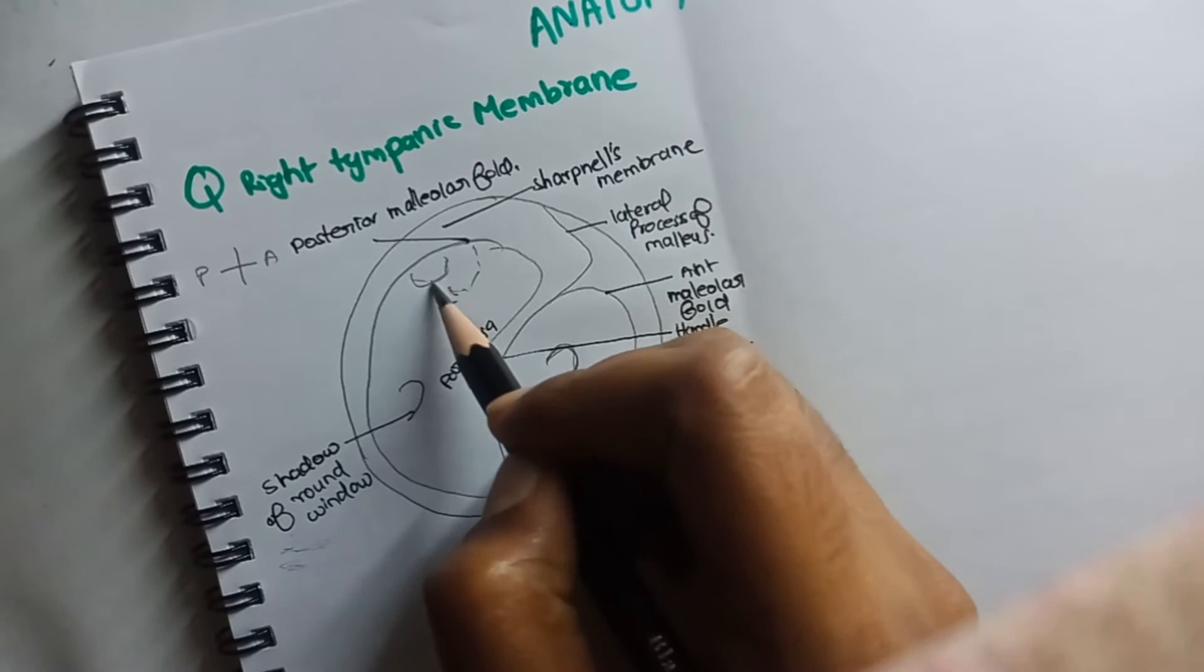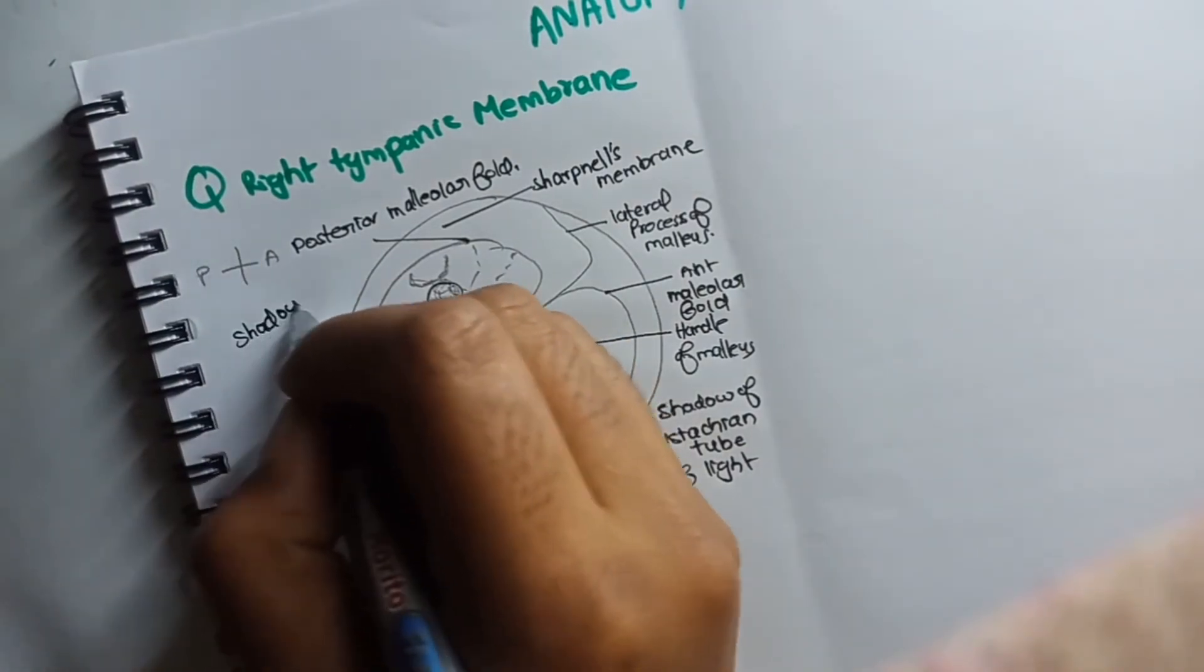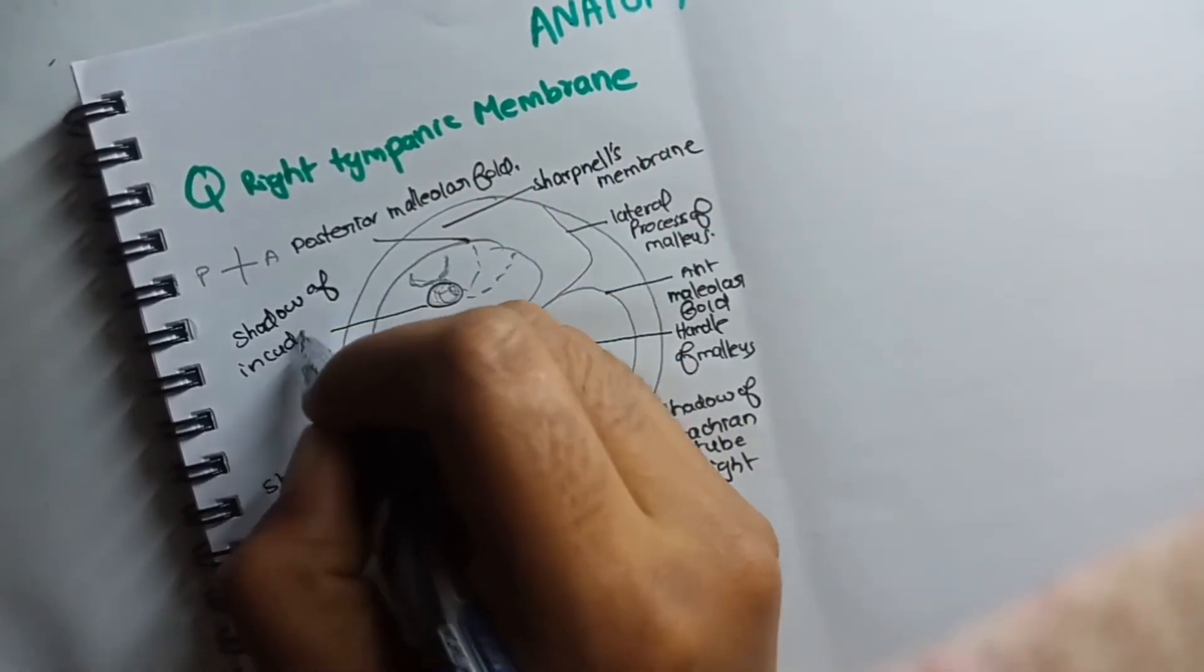And then in the posterior superior part there will be the shadow of the incudostapedial joint.